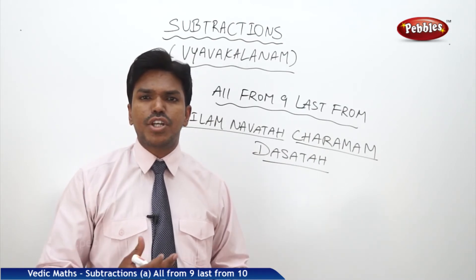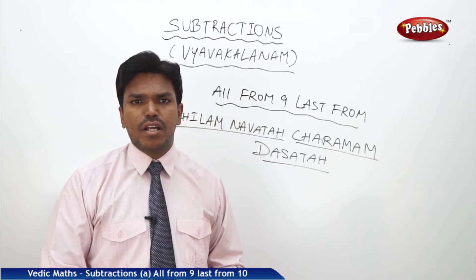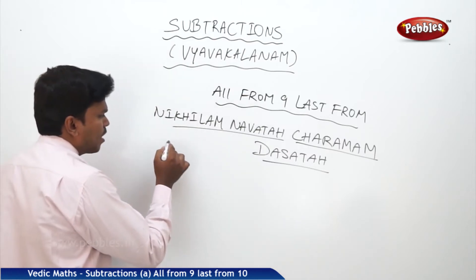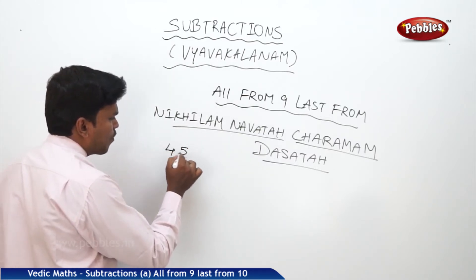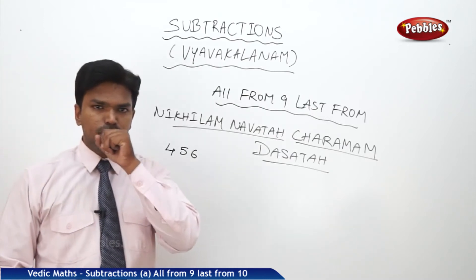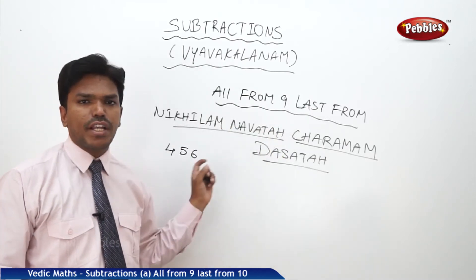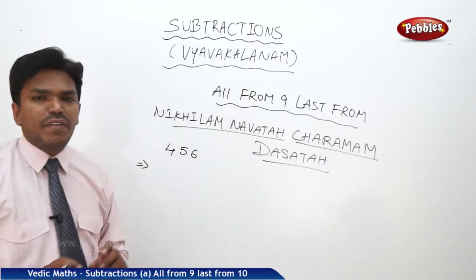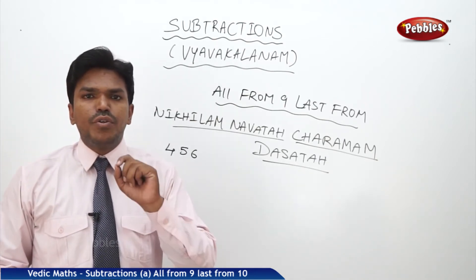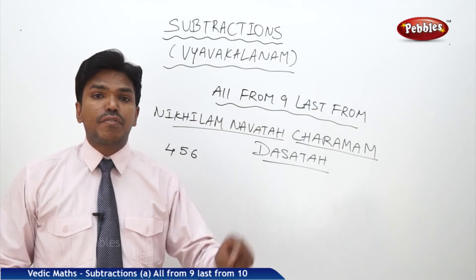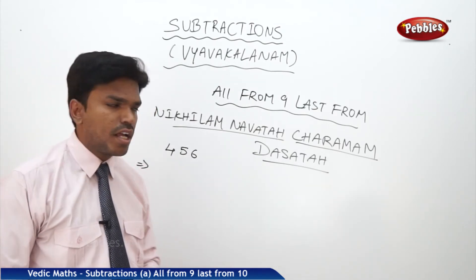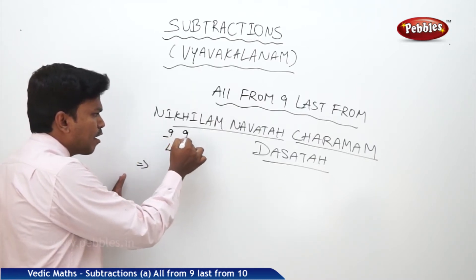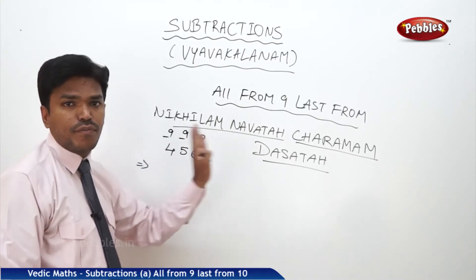What is Nikhilam Navataha Cheramam Dasataha, or 'All from Nine, Last from Ten'? For example, take the number 456. The rule is: subtract every digit from nine, but the last digit from ten, starting from left to right.